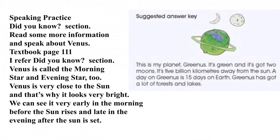I'll read. Look at the picture. This is my planet Greenus. It is green and it's got two moons. It is five billion away from the sun. A day on Greenus is fifteen days on Earth. Greenus has got a lot of forests and lakes. The air is fresh.